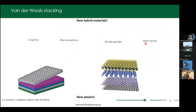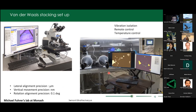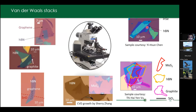This is what we use in the lab to create new interfaces for materials like graphene and topological insulators, leading to new hybrid materials and new physics. This is a brief look at Professor Michael Fuhrer's lab at Monash, where we have these van der Waals stacking setups. There is one in atmosphere and one inside a glove box. We have good vibration control, and these are all remote-controlled to protect from human error as much as possible. They also provide lateral alignment precision, vertical movement precision, and rotational alignment precision.